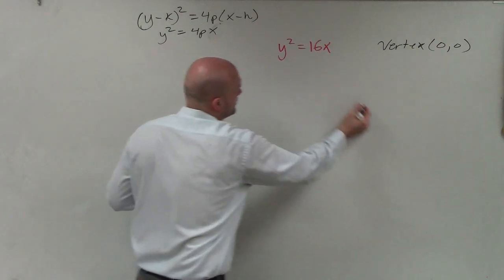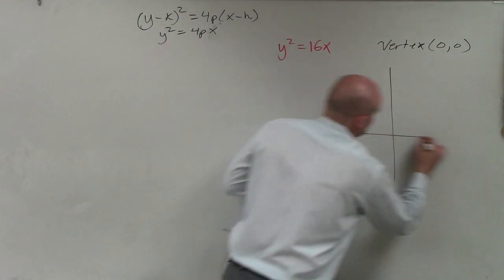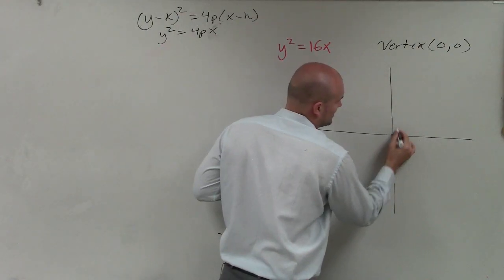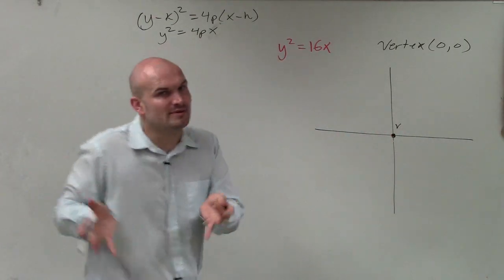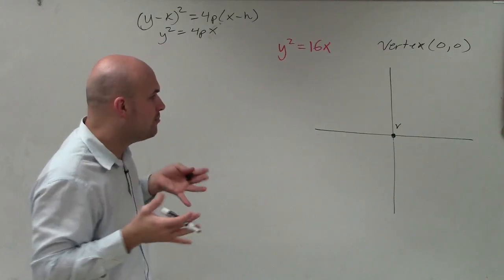Now the next thing, so to graph this, that's what we're going to want to do. We're going to want to write in the vertex. Now again, my graph either opens up to the left or opens up to the right, and I need to determine what is the correct mode for that.